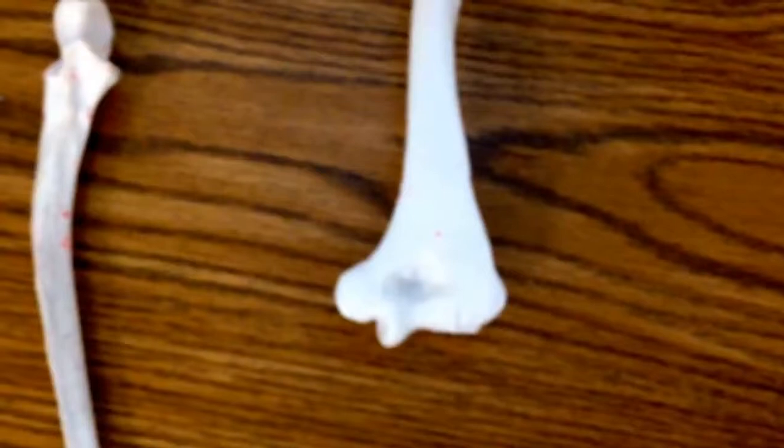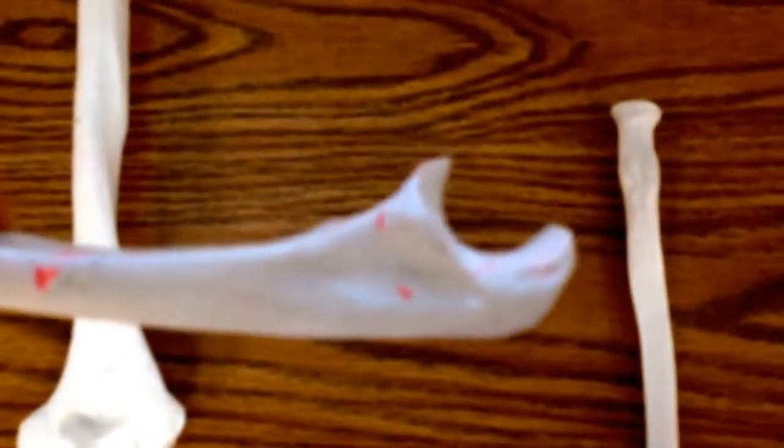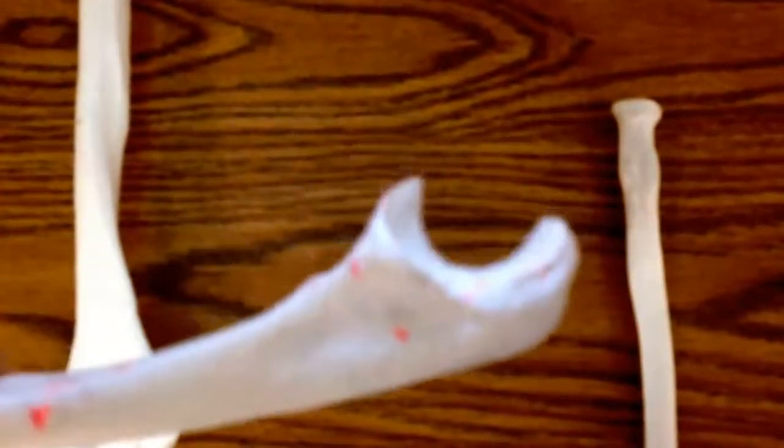Next we're going to take a look at the ulna and the radius. The ulna is easy to distinguish because of its U for ulna.